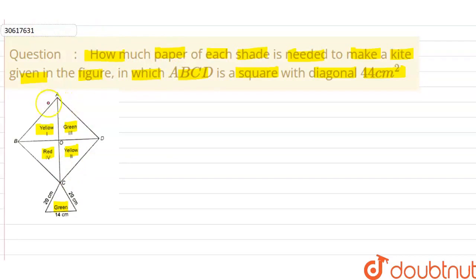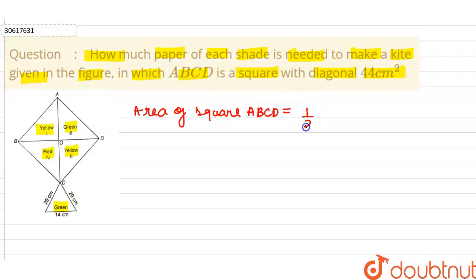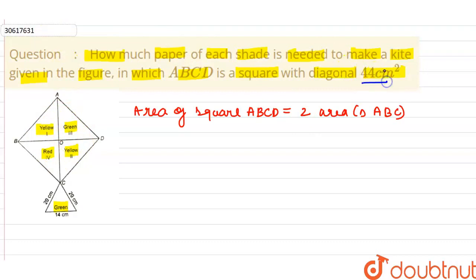Basically, ABCD is a square. The diagonal is 44cm, so if AC is 44cm, then BC is 44cm. The half-diagonal will be 22cm and 22cm — so both half-diagonals are 22cm each.